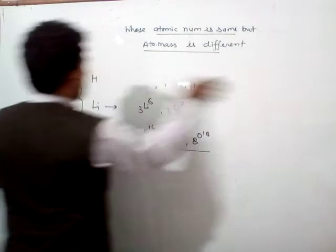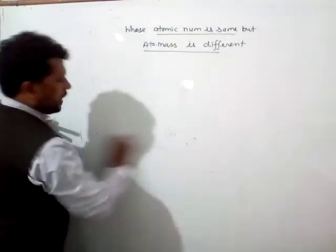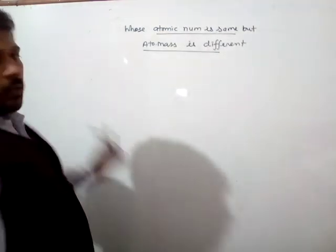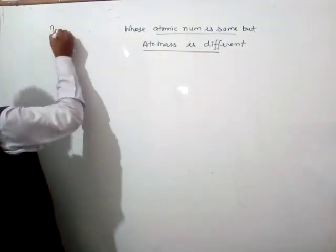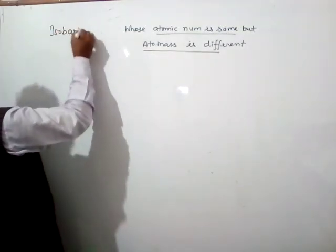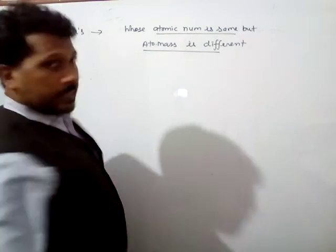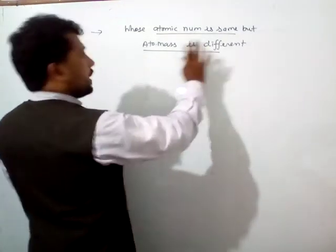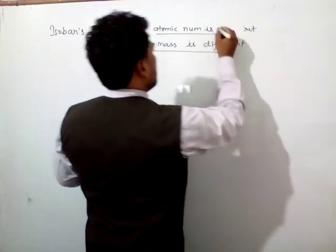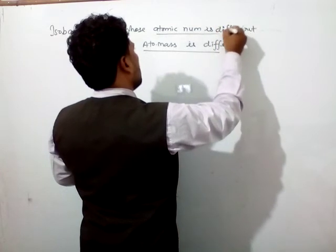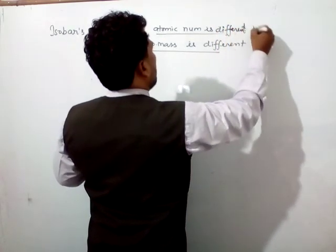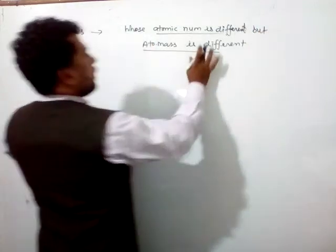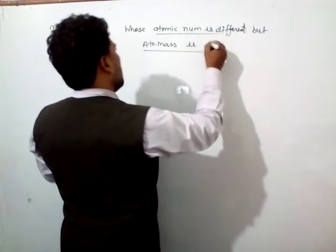And now, let me discuss here the isobars. So isobars are opposite from isotopes. So isobars for the same atom, those whose atomic number is different, but atomic mass is same. Now these are different from isotopes.